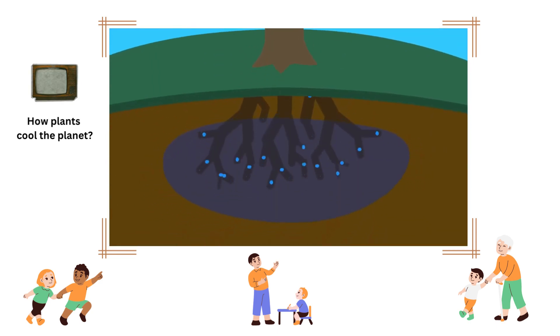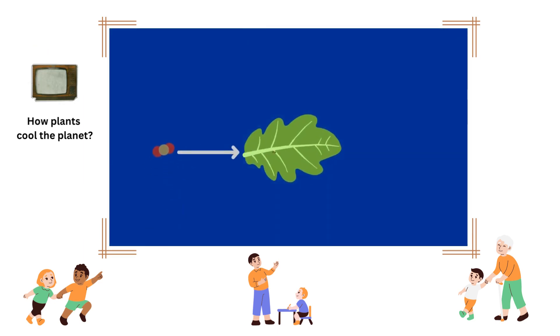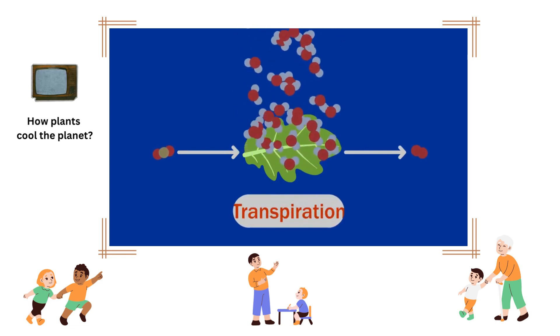We all know that plants drink water through their roots, but what happens to that water? Most of it comes out through the leaves as part of the process of photosynthesis. In fact, for each molecule of carbon dioxide fixed and each molecule of oxygen released, several hundred molecules of water are evaporated. This is what we call transpiration.